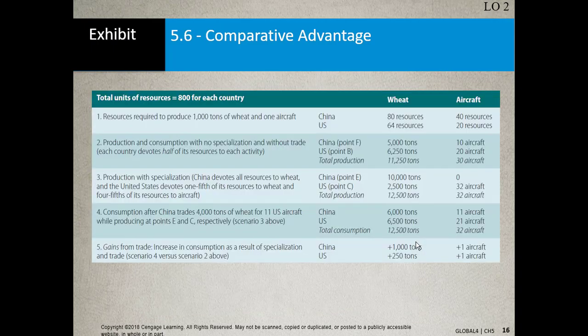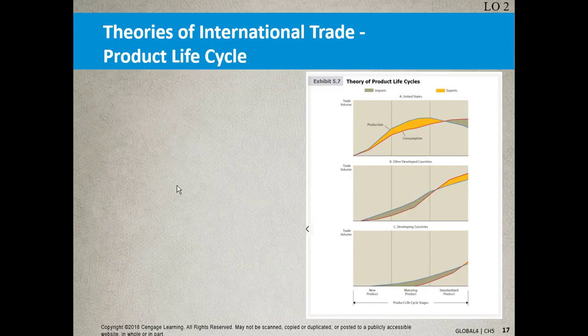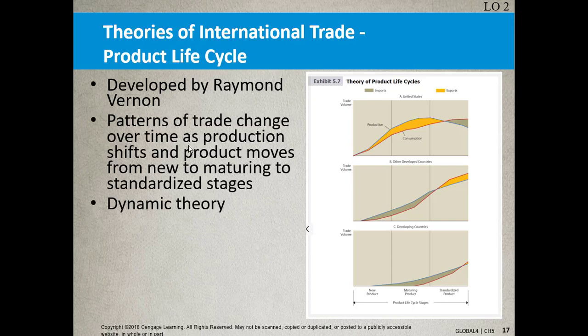Now let's go on to the third theory of international trade. We're getting into the more modern theories. The product life cycle theory, developed by Raymond Vernon, describes a pattern of trade that changes over time as production shifts and products move from new to maturing to standardized stages. It's a dynamic theory that divides the world into three categories.